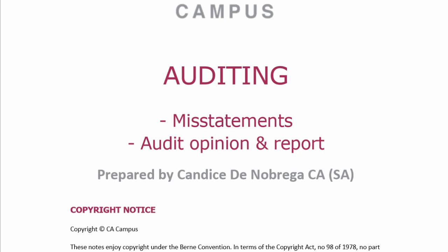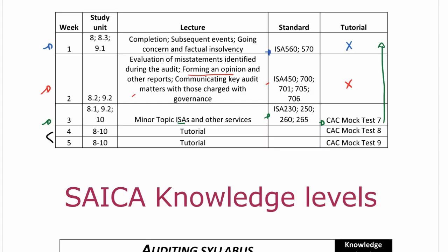Let's quickly go and have a look at your schedule to see at what level you have to know each of these standards. We're in week two: evaluation of misstatements, forming an opinion and other reports, communicating key audit matters with those charged with governance. The standards are ISA 450, 700, 701, 705, and 706.